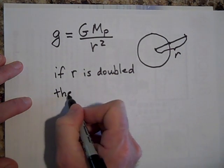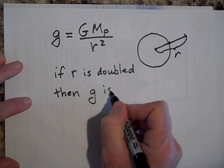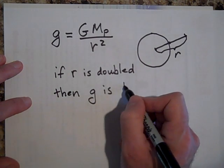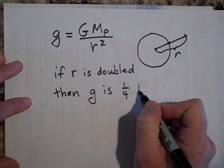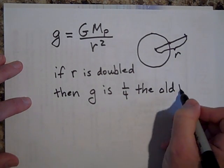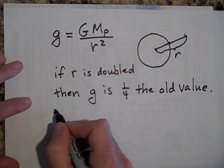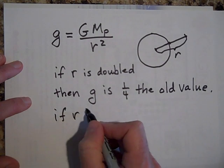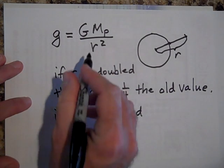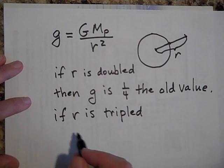If R is tripled, then g goes down by a ninth. Notice that this goes way down to a ninth of its old value.